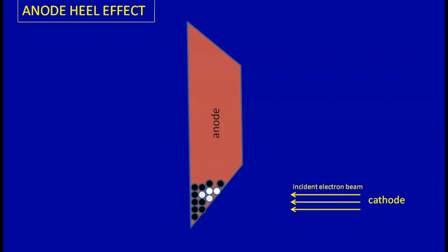This effect stems from the fact that X-ray photons are produced not only at the surface of the anode but also at deeper levels within the substance of the anode. And X-rays are isotropic in nature, that means they are emitted equally in all directions.